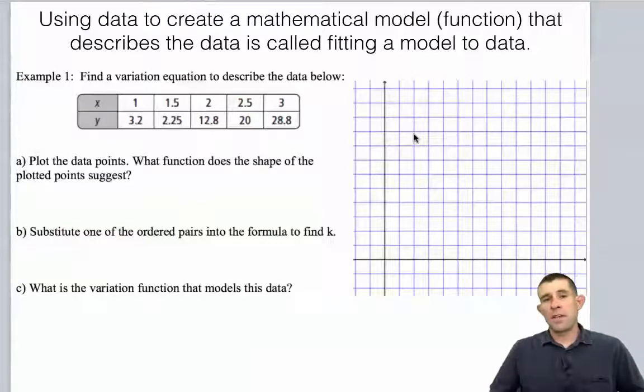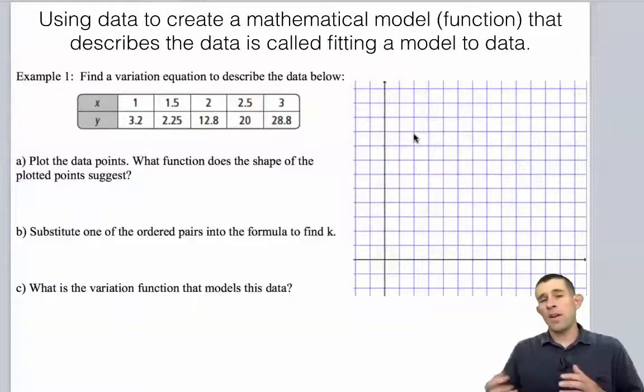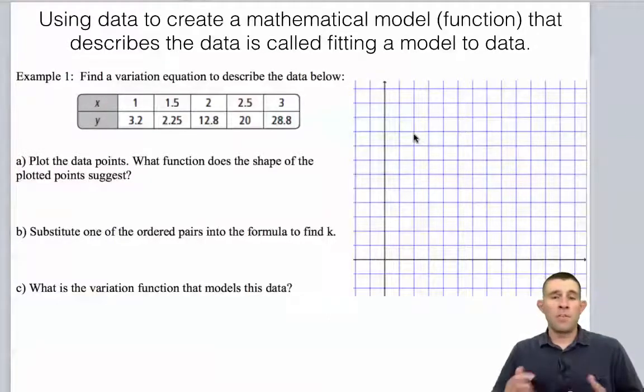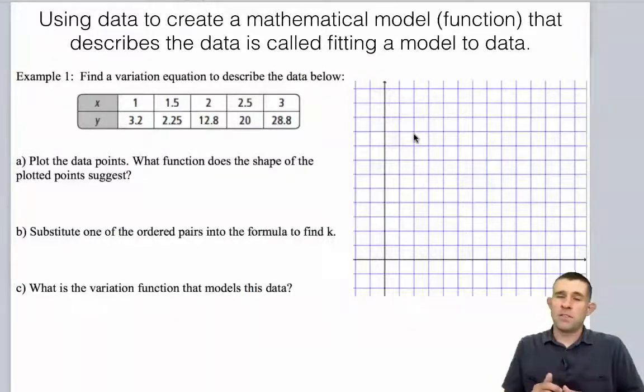So far in this chapter, we've taken a look at direct and inverse variation equations. We've looked at their graphs and some of their properties. And today we're going to turn our attention to looking at some data, plotting that data over a graph, and trying to come up with whether it's an inverse or a direct variation. From there, we're going to try to find a model or an equation that fits that data. So whenever we take data to create a mathematical model, that's called fitting a model to the data. So let's jump in with just a few examples.